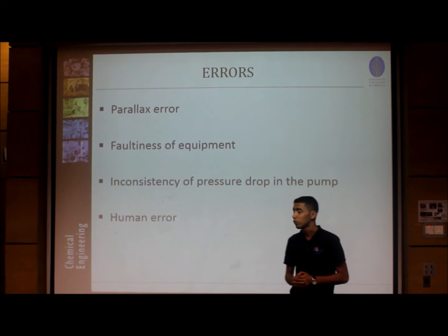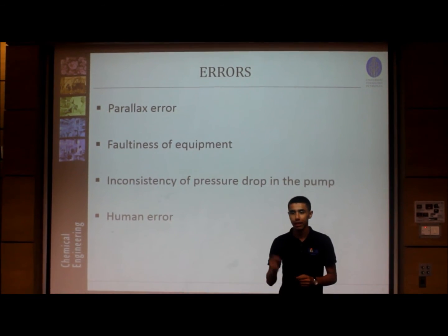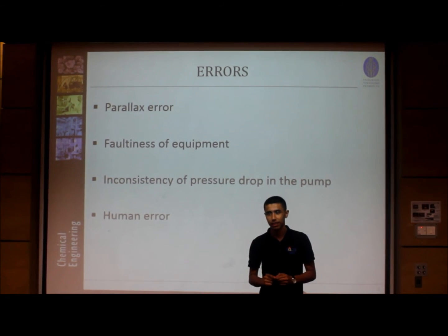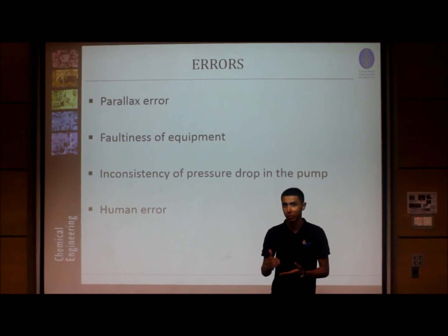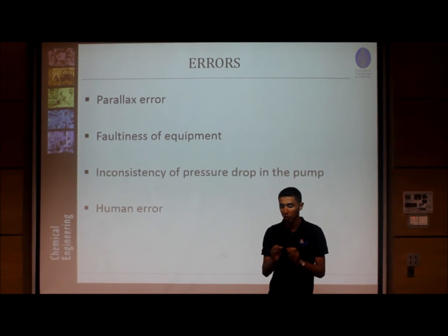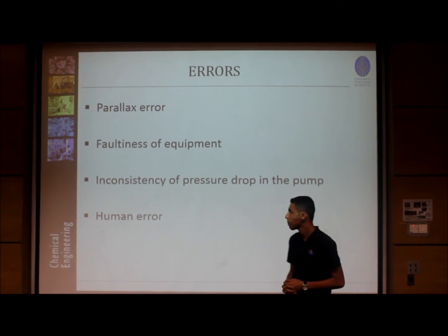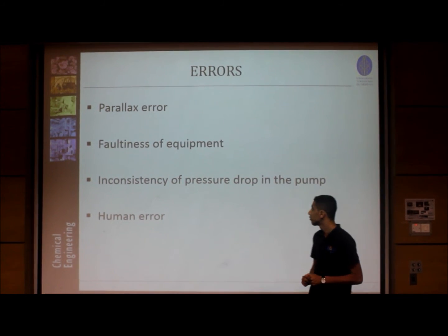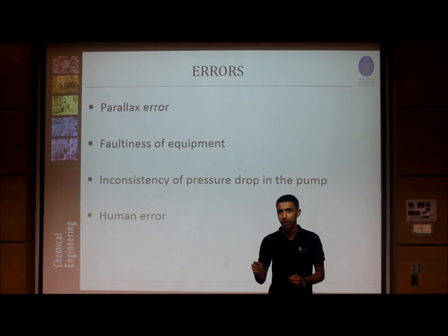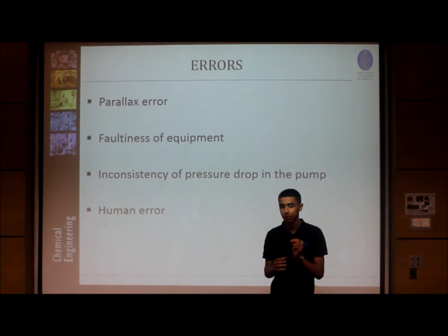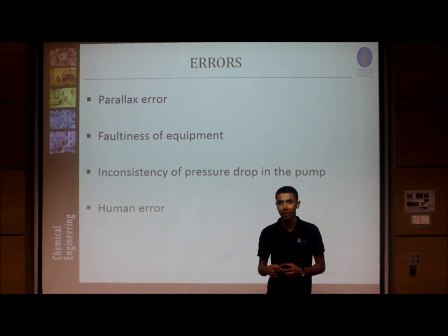The third error is inconsistency of pressure drop in the pump — the pressure values were fluctuating, making it difficult to get accurate readings. It is better to use a digital pump that can adjust and control values automatically. The fourth error is human error — it is not easy to make very accurate measurements for evaporate, condensate, or concentrate, so it is better to use video recording to monitor the process.